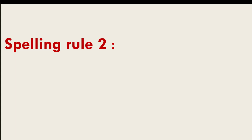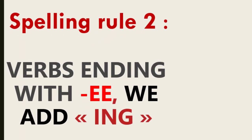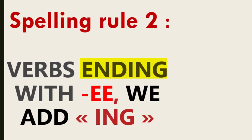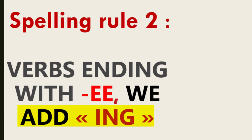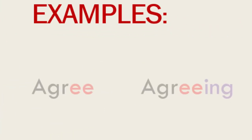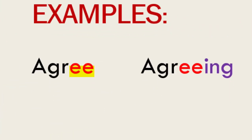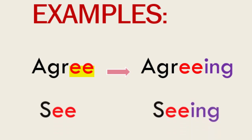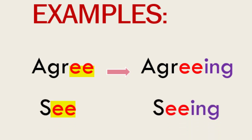Spelling rule 2: verbs ending with double E — we add -ing. Examples: agree → agreeing, see → seeing.